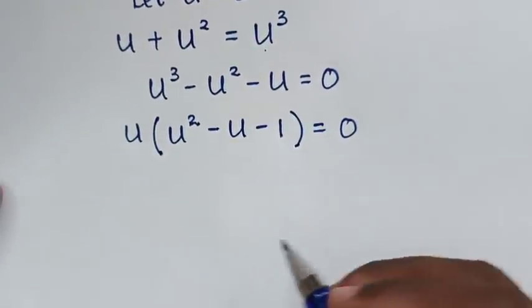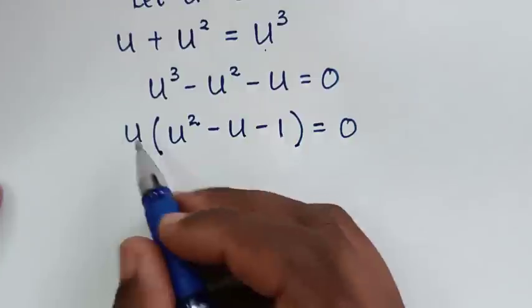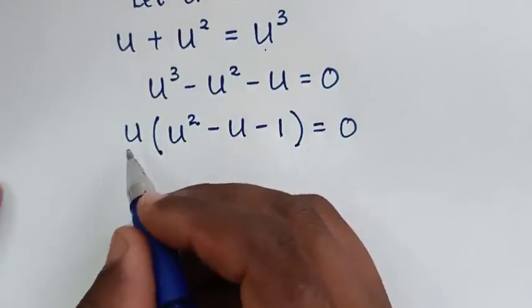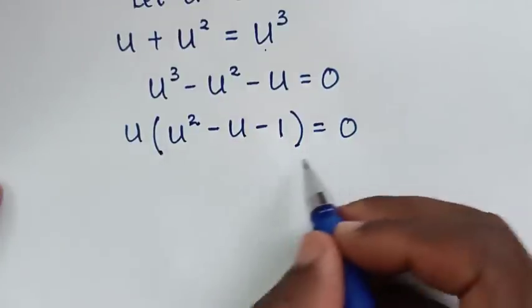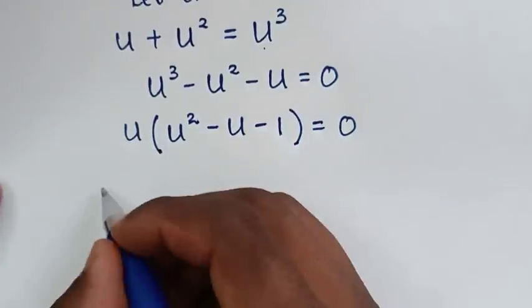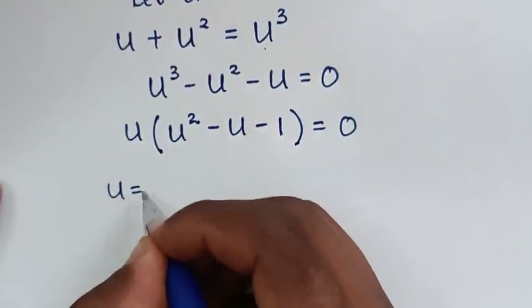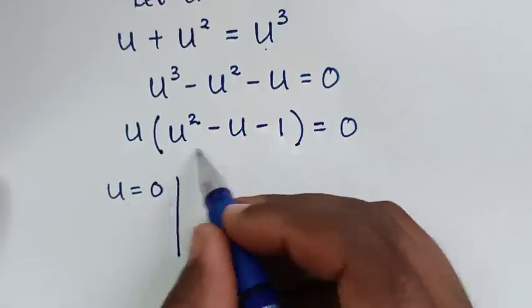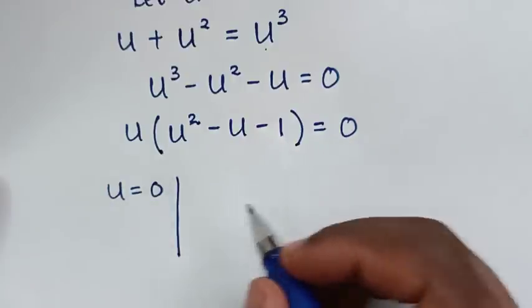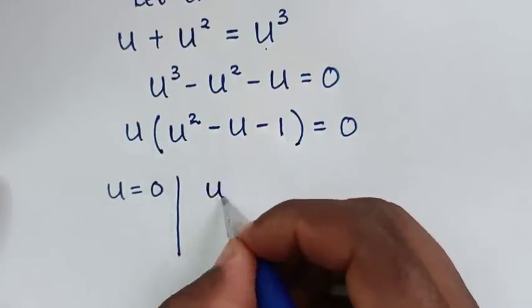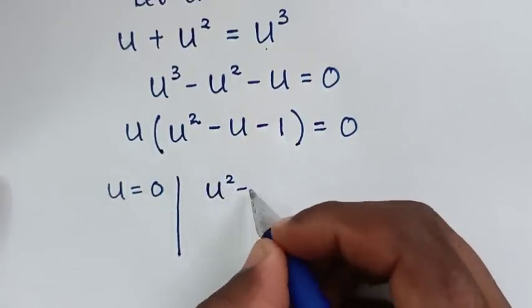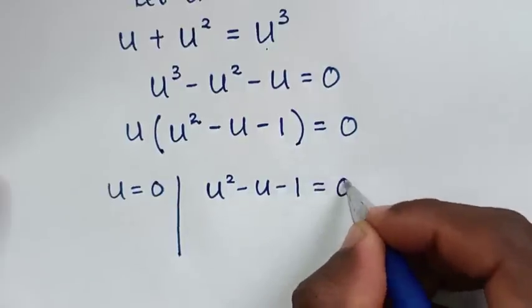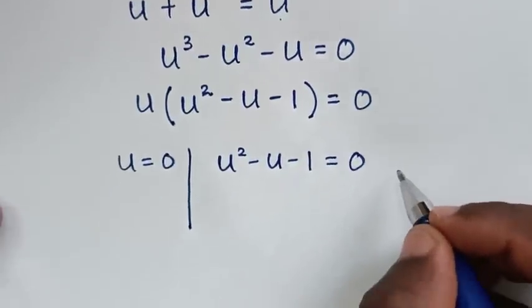This gives us two solutions. The first solution is u equals 0, and the second solution comes from u² minus u minus 1 equals 0.